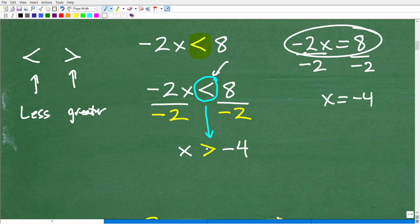So, we're going to go from less than to greater than. And so, this is the answer. Okay? So, we have x is greater than negative 4. All right? All x is greater than negative 4 is the solution to this inequality right here. Negative 2x is less than 8.